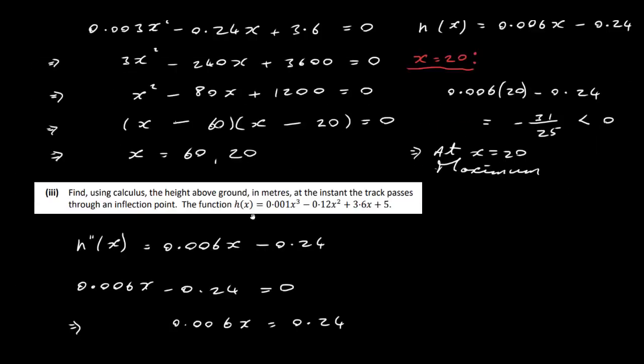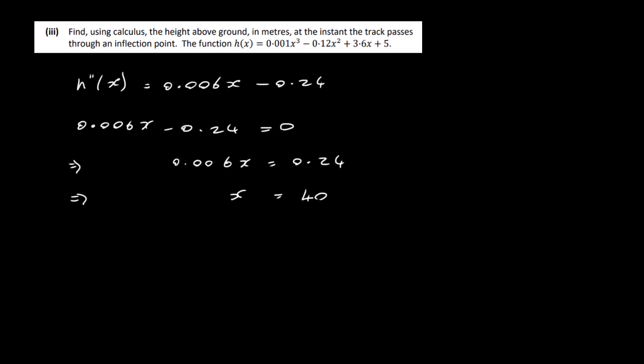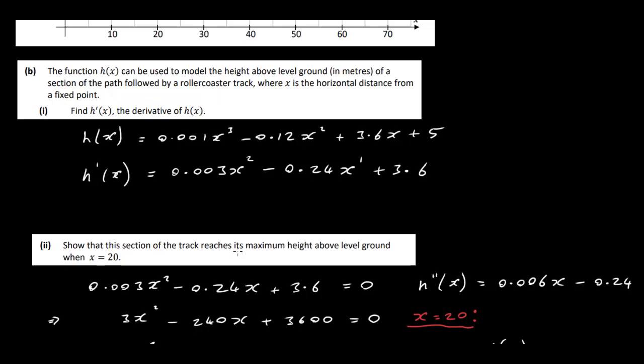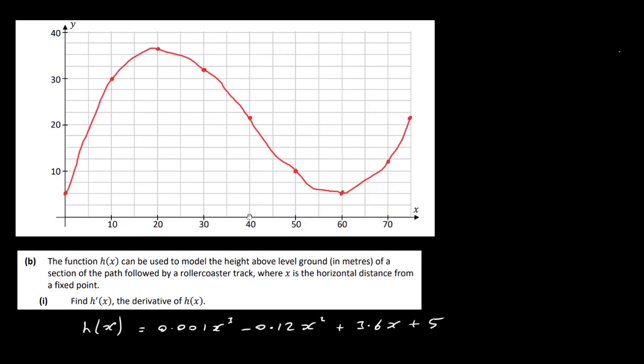Okay, so we've got to find the height above the ground, so we've got to find the y value. So this is in meters, so the way you find the y value here is to put it into our original function. So we want h(40), so we're going to put that in. So that's going to be 0.001 × 40³ - 0.12 × 40² + 3.6 × 40 + 5. So that's again, just a lot of calculator work, so you can do it. You can do that in two or three steps, and eventually you should get 21 meters. So that's the height above the ground.